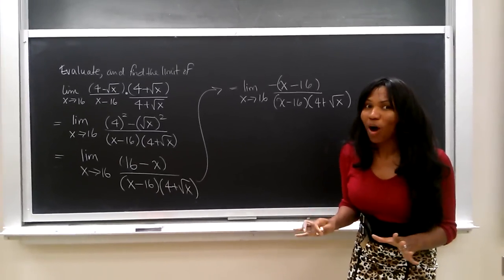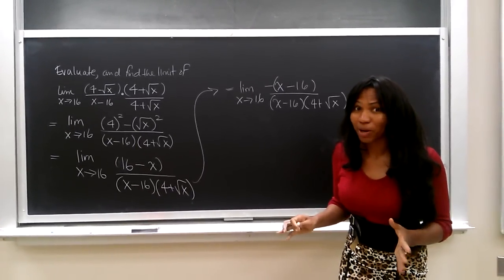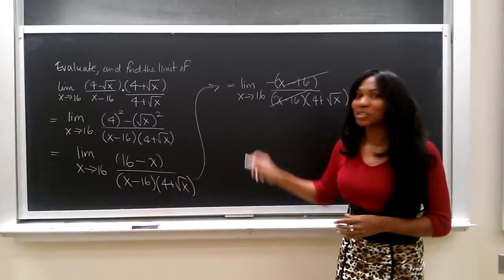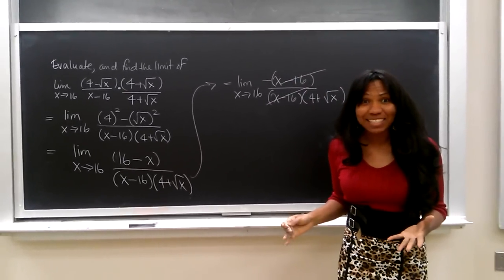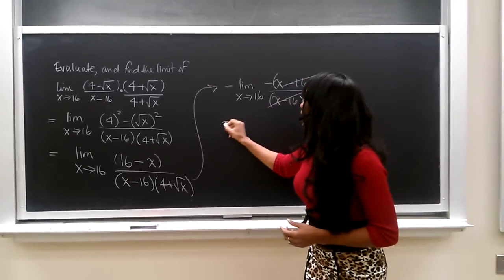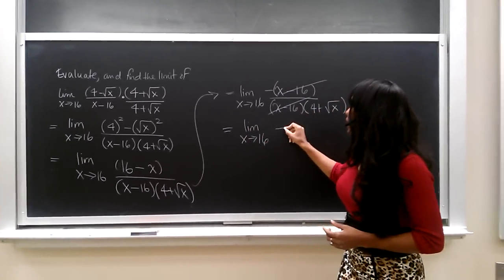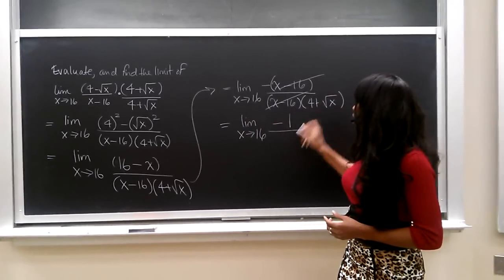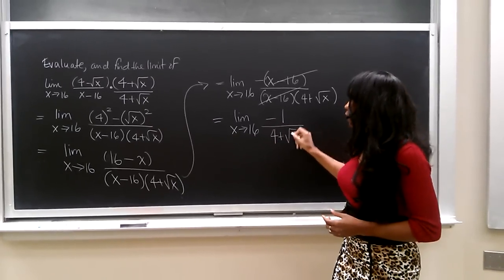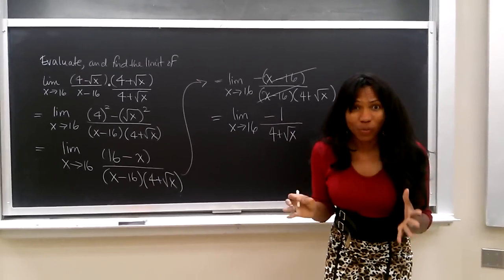This is why we didn't want to multiply the denominator, because we can cancel out this x minus 16 quantity. That gives us the limit as x approaches 16 of negative 1 over 4 plus the square root of x. This is what we want.